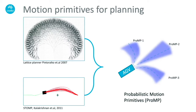Motion primitive based planners like lattice planners are fast and generate kinematically consistent paths, however they suffer from discretization overheads. On the other hand, trajectory optimization approaches can find optimal paths given enough time, but require high sampling rates in cluttered environments, often making them infeasible for real-time hardware runs.